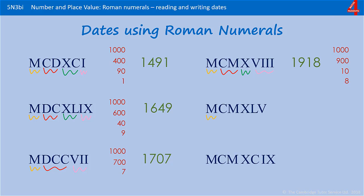Next one — we have 1000. Again, we have 100 in front of a 1000, so that's 900. Then we have a 10, but it's in front of an L — in front of 50 — so that's 40. And then 5. That's the end of World War II, so that's 1945.